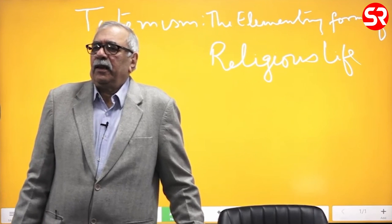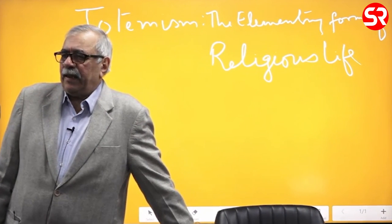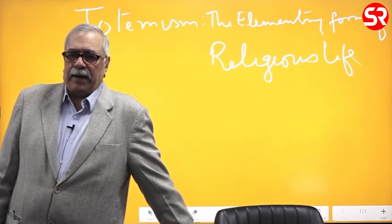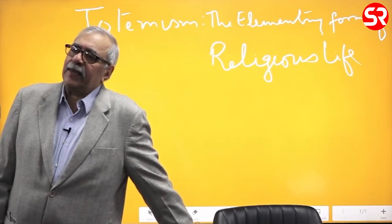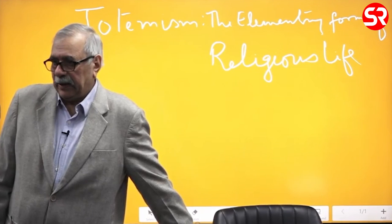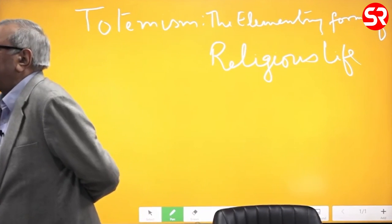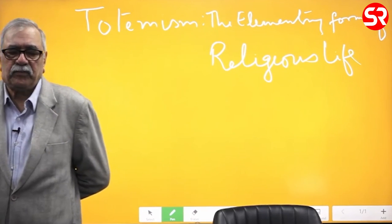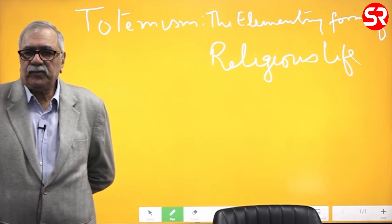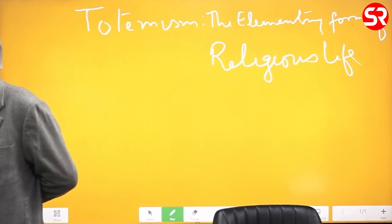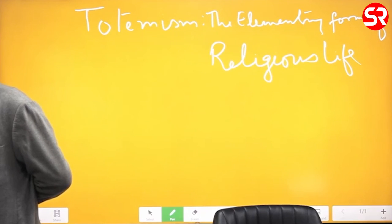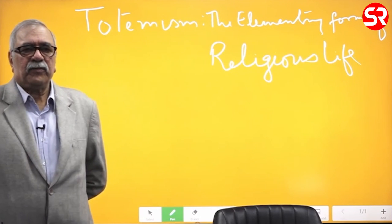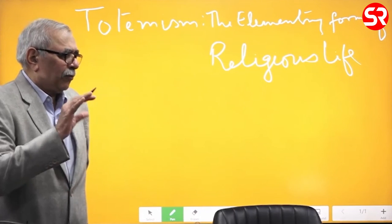This object is considered by the people — by the believers, by the members of the group — as their ancestor. They claim to have descended from this object. Among Hindus in India, the cow has something of a totem-like status. It's not exactly a totem, but quite totem-like.